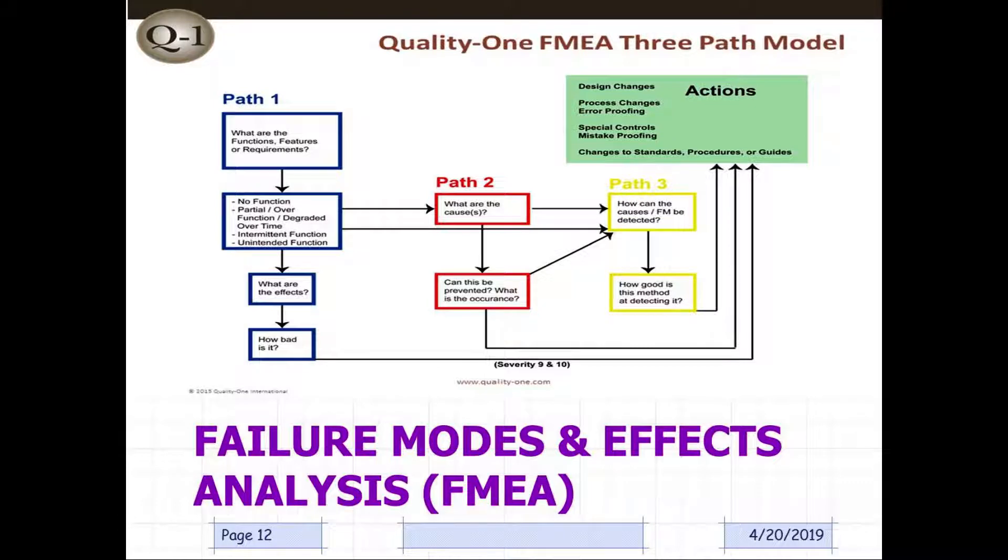So here's what a failure modes and effect analysis looks like. These are usually called FMEA. It's a three-path model. As you can see, path 1, 2, and 3. One is what are the functions, features, or requirements? If there's no function, partial or over, intermittent or unintended, and what are the effects and how bad is it? Path 2 is what are the causes? Can it be prevented? And then path 3 is how can the cause be detected? And how good is this method at detecting it? And then what are the actions? Design changes, process changes, error proofing, special controls, or mistake proofing? And changes to standards, procedures, or guides.